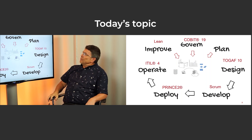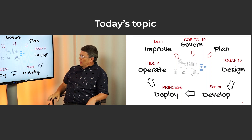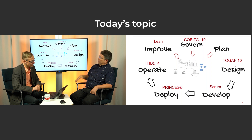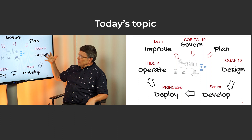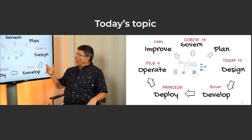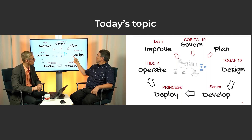ITIL is not very good for planning and designing. If we are mainly interested in improving things, Lean would be a good framework. If we are developing software, Scrum could be a model for that. A deployment project could be organized according to PRINCE2. If we want to govern everything, then COBIT is a framework suitable for governance. So what we're mainly interested in today is planning and designing things.